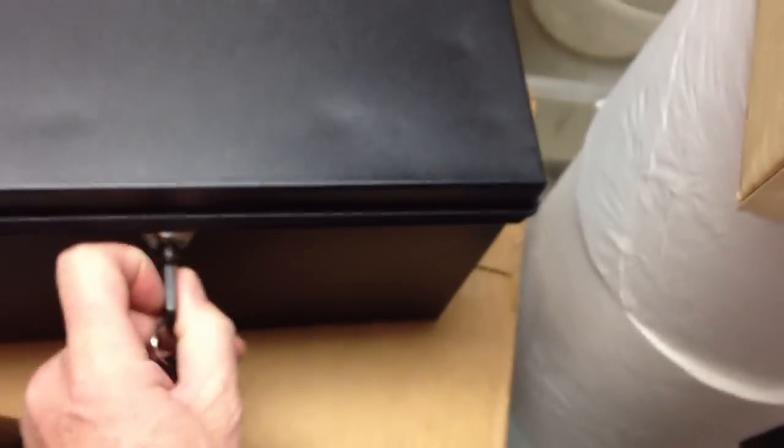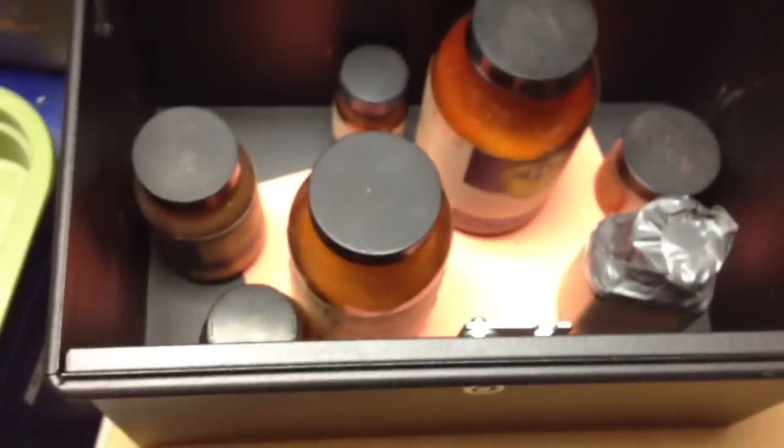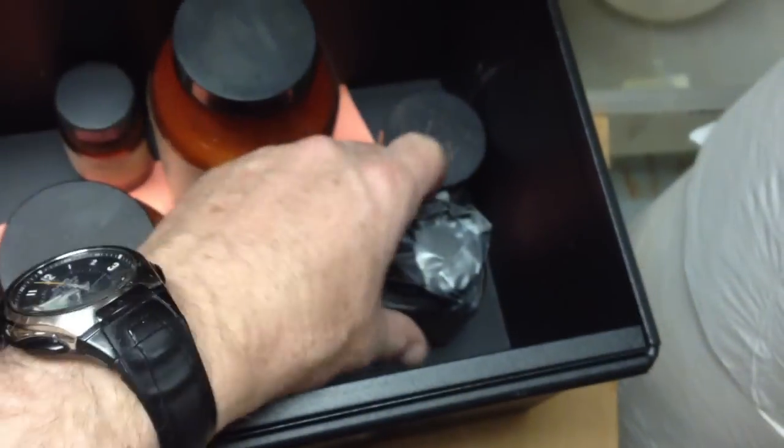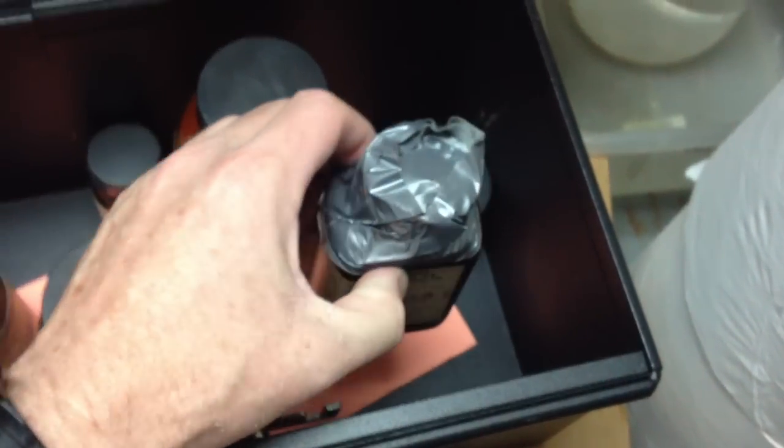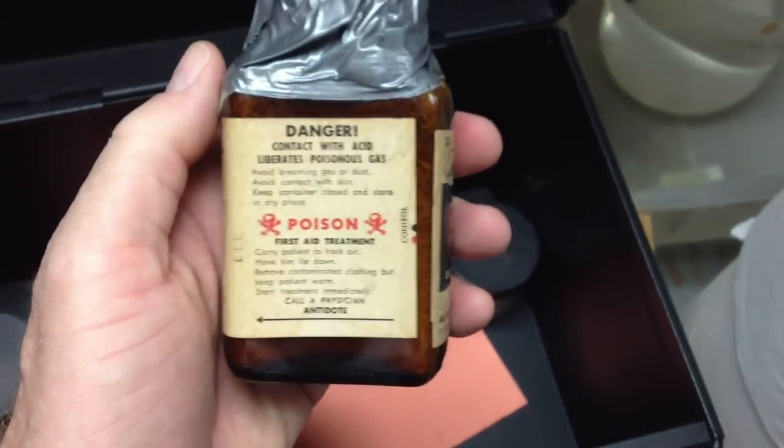So behind two locked doors, there's a locked cupboard hidden away from everyone. What's in here? Every chemistry department has one. Yes, this is the poisons. Stuff we bought that probably we wish we hadn't. But there we go. From years ago.